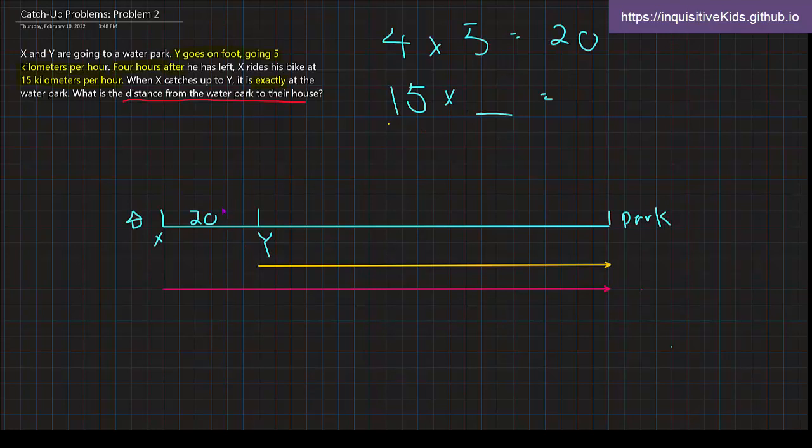So we know that this is four hours. Well, now that we know that their distance and track is 20 kilometers, we divide that by their difference in their speeds, which would be 15 minus 5, right? So then we have 10 right here.